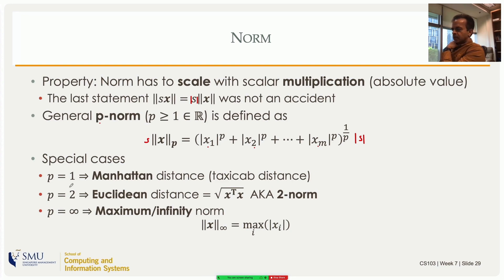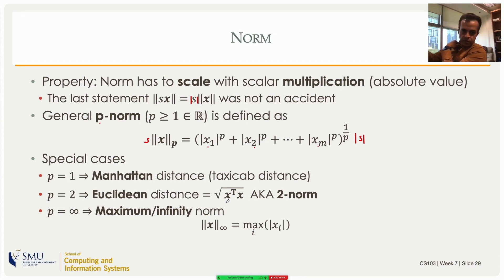Special cases: the 1-norm is the Manhattan or taxicab distance, and p equal to 2 is the Euclidean distance or Euclidean norm. In this course we work with the 2-norm. Many machine learning and pattern recognition algorithms like k-means clustering use Euclidean distance by default, but they can use other distances too. Euclidean distance is sensitive to outliers because the distance comes in as a square, which gets very large for outliers. For that reason, some people prefer the 1-norm, which is more robust against outliers.